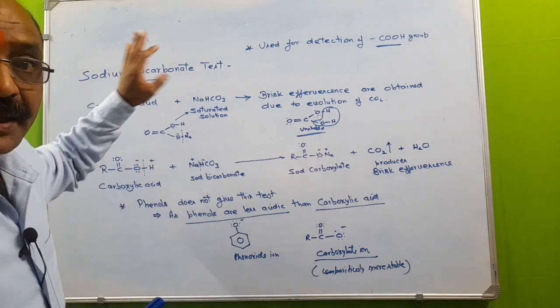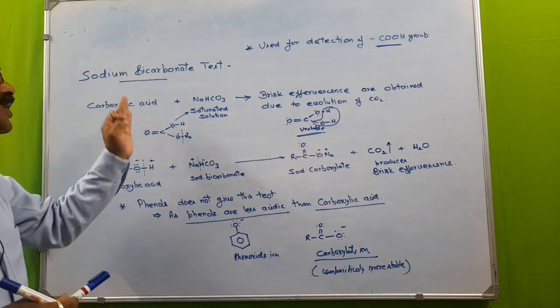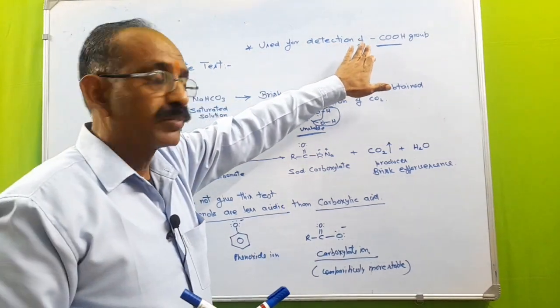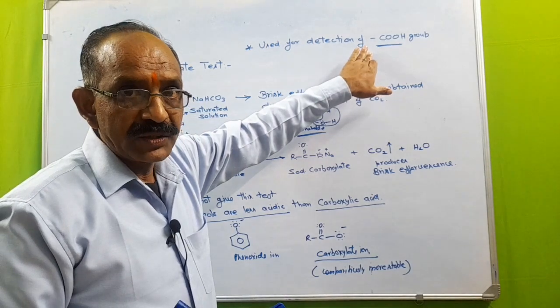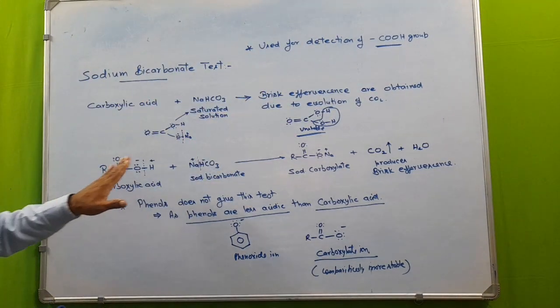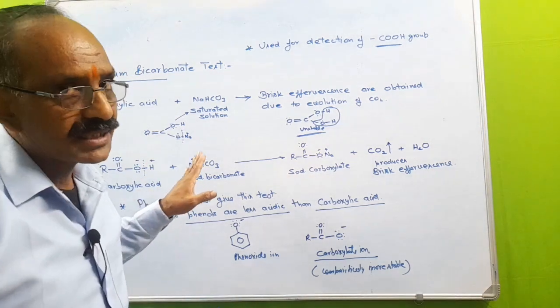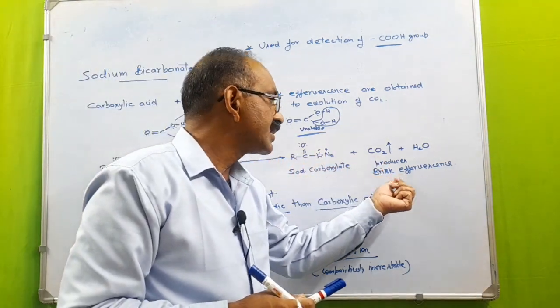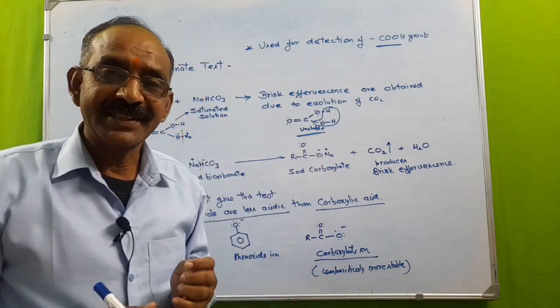So remember, the sodium bicarbonate test is used for the detection of the carboxylic group, COOH group. So the compounds which are having COOH group, when treated with sodium bicarbonate saturated solution, they produce a brisk effervescence. Is it clear?